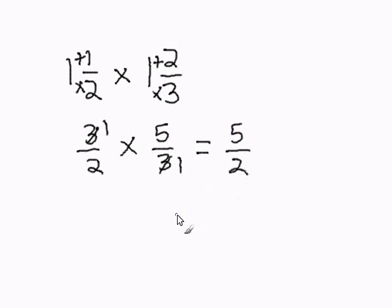Our resulting fraction is an improper fraction. We must convert this to a mixed number. 2 goes into 5 two times.